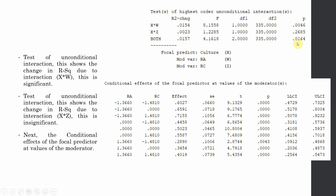Looking at conditional effects: at lower level of role ambiguity and lower level of role conflict, the effect is significant. At lower role ambiguity and average role conflict, the effect increases and remains significant. It further increases at lower role ambiguity and higher role conflict. The changes are primarily due to role ambiguity, since it has a higher change in R-square, while role conflict does not moderate the relationship.